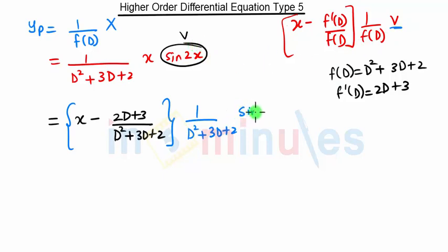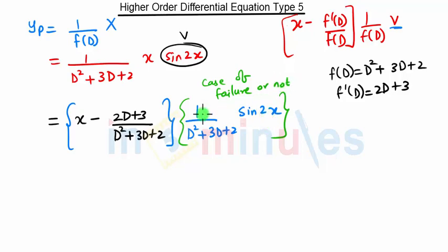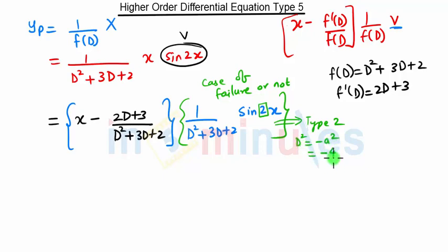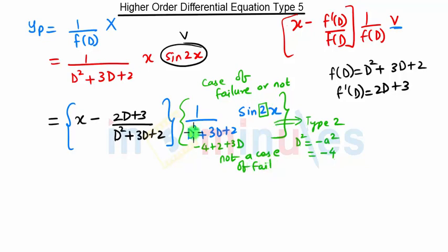After writing this equation, we check whether this term is a case of failure or not. This is of the form of Type 2. In Type 2, we replace D squared by minus of A squared. In our case A is 2, so A squared is 4, and we replace D squared by minus 4. So here we get minus 4 plus 2, and this 3D will remain as it is. This is not a case of failure.